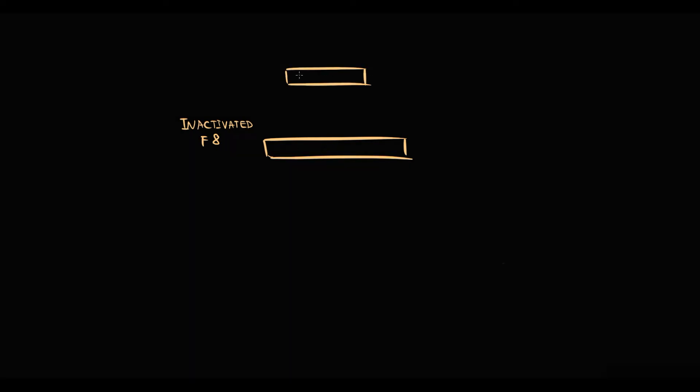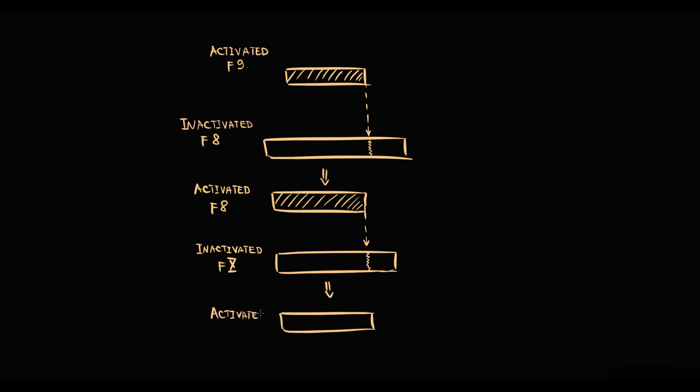In normal conditions, this cleavage is provided by another activated coagulation factor. Let's say activated factor 9 cleaves a small part of inactivated factor 8, and this cleavage results in activation of factor 8, that in turn will cleave a part of factor 10, thereby activating it. This process is repeated over and over again.